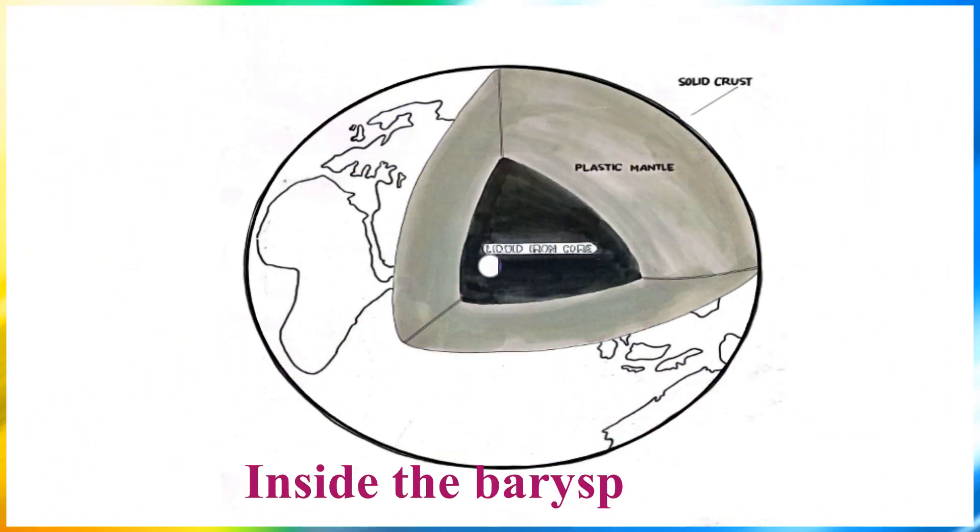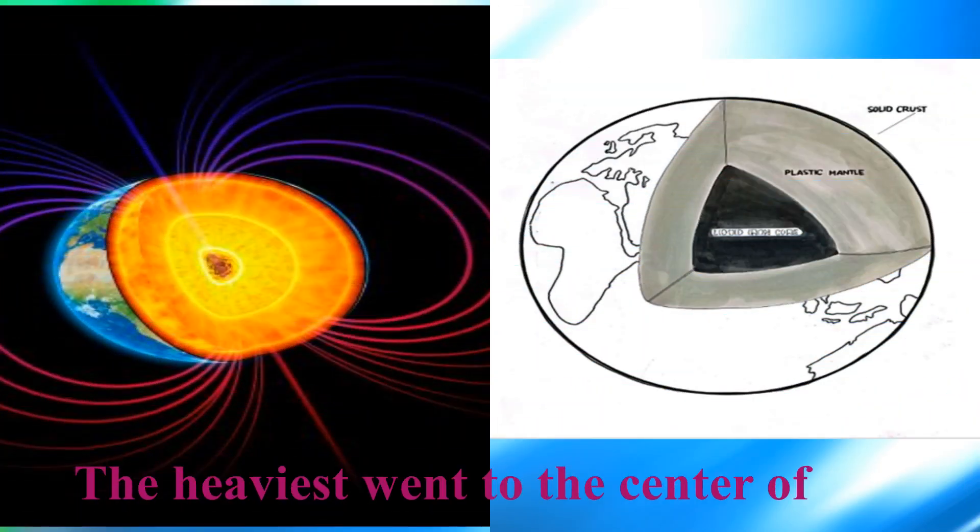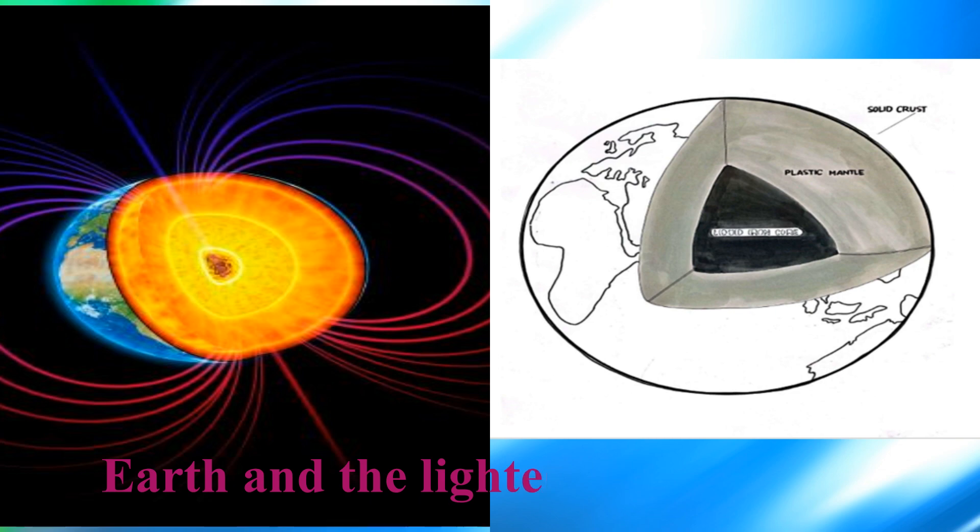Inside the barysphere, things settled according to their weight. The heaviest went to the center of the earth and the lighter floated on top.